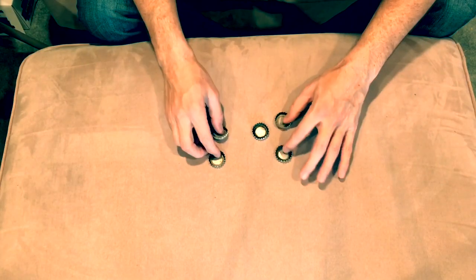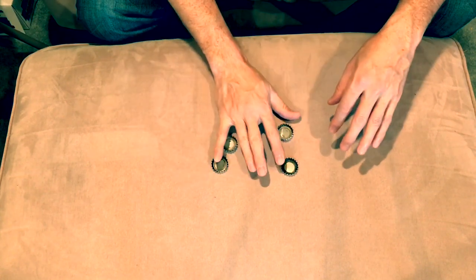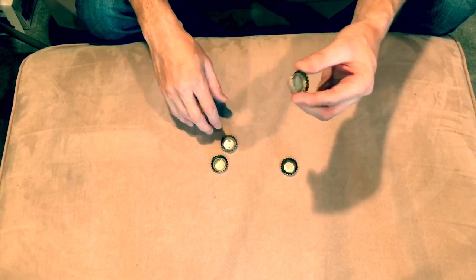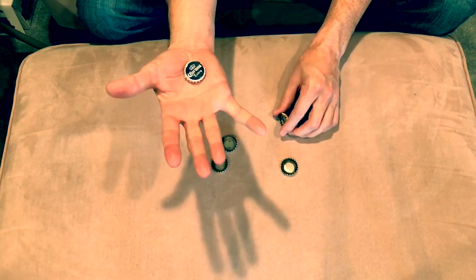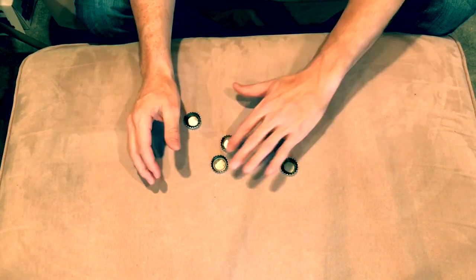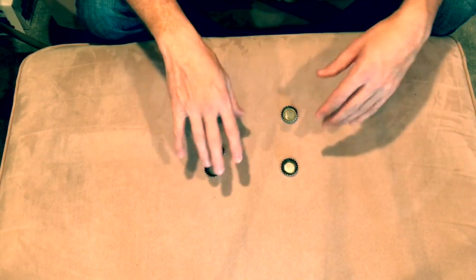So here's the secret: there's actually five bottle caps when you start the trick and one of them is going to be palmed in your hand. Now what's nice about using bottle caps is they have these little ridges so it's really easy to palm them. You barely even have to squeeze and they stick. It's very easy to pick them up with your palm and put them back down and it looks pretty natural.